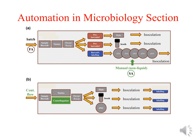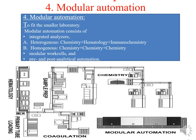These are the different types of automations. The fourth type is the modular automation system, which is generally used for small laboratories. It consists of integrated analyzers, and the integration may be heterogeneous — where different analyzers doing different types of testing are integrated.